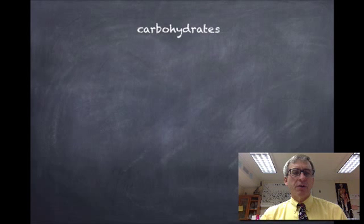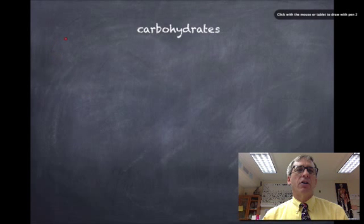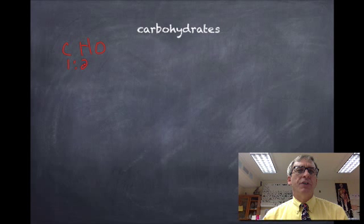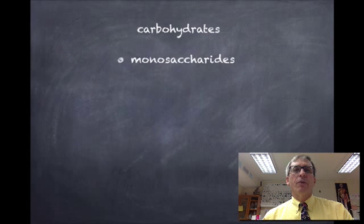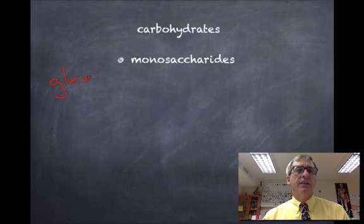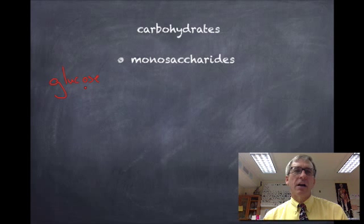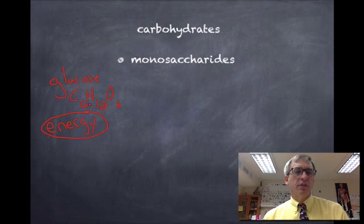Let's go into our macromolecules — carbohydrates. Carbohydrates are made out of carbon, hydrogen, and oxygen, usually found in a 1 to 2 to 1 ratio. The most important carbohydrate to mention is one of our monosaccharides: glucose. Glucose is what cells use for energy. It's a product of photosynthesis, and the carbohydrates you eat are eventually broken down to glucose, which can go into your mitochondria. Glucose is C6H12O6, and carbohydrates are our main source of energy for pretty much all living things.